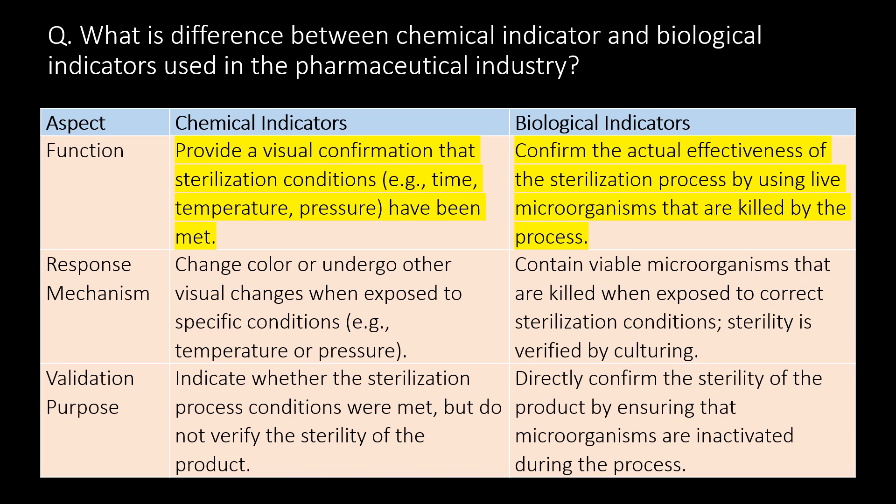A very important question: what is the difference between chemical indicators and biological indicators used in the pharmaceutical industry? You can refer to the bullet table and differentiate between chemical and biological indicators with three aspects: function, response mechanism, and validation purpose. Chemical indicators provide a visual confirmation that sterilization conditions — example time, temperature, pressure — have been met, whereas biological indicators confirm the actual effectiveness of the sterilization process by using live microorganisms that are killed by the process.